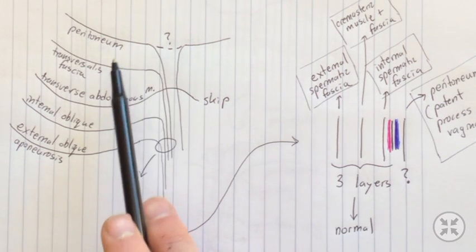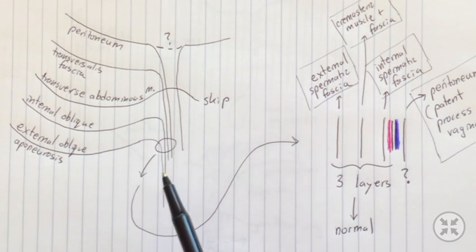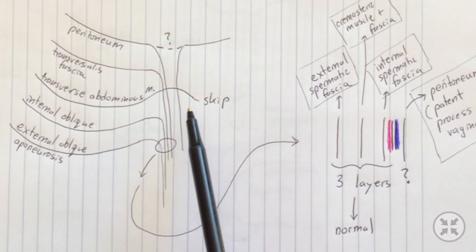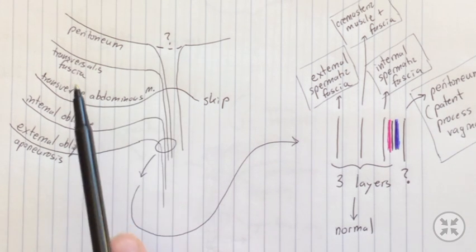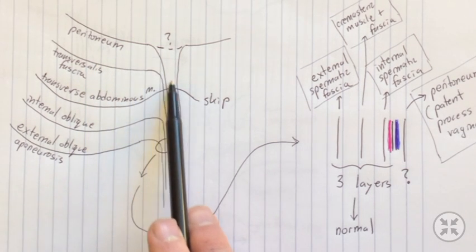As the spermatic cord travels through different rings, it actually picks up different layers of fascia. I kind of think of each of them giving something to it as it passes along. So as you have your vas deferens and you have your arteries passing down, they're actually not inside the peritoneum. They'll be coming down.